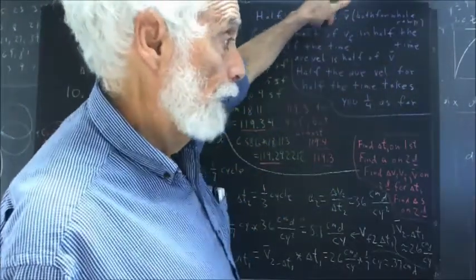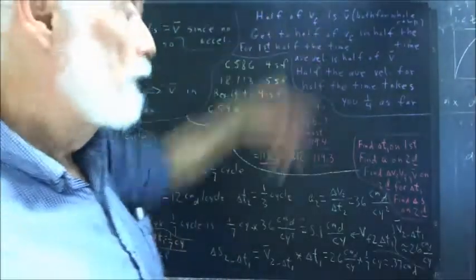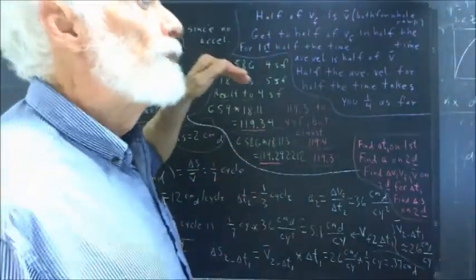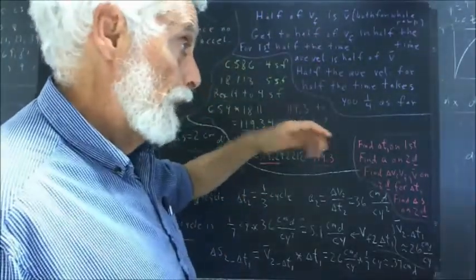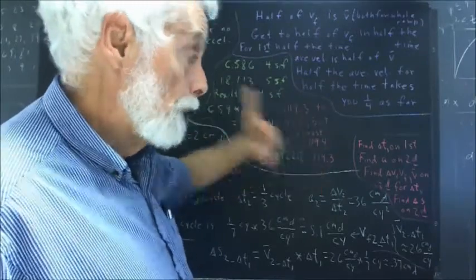In other words, half of the average velocity on the whole ramp. Now, what are we doing? We're going for half the time and achieving half the average velocity.